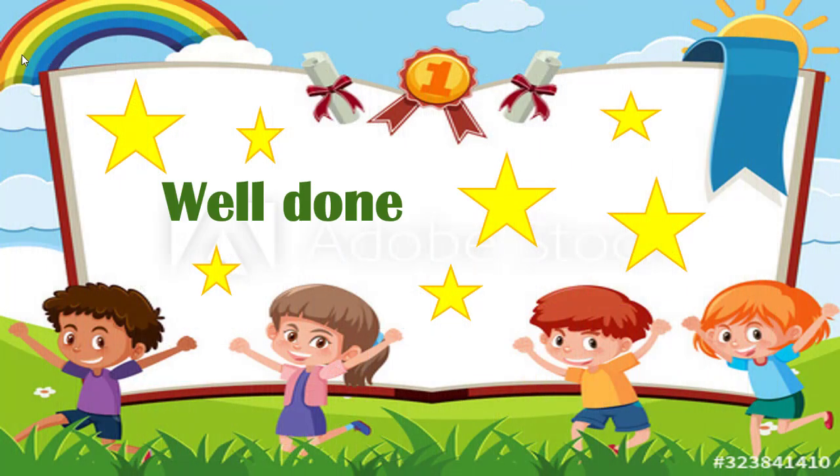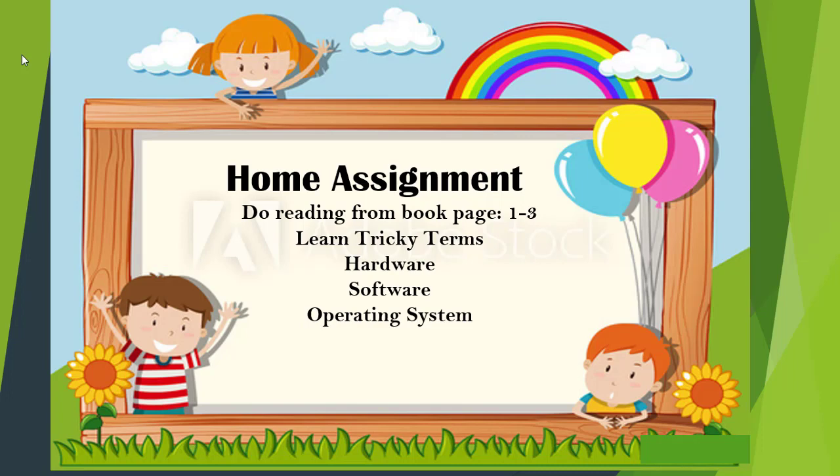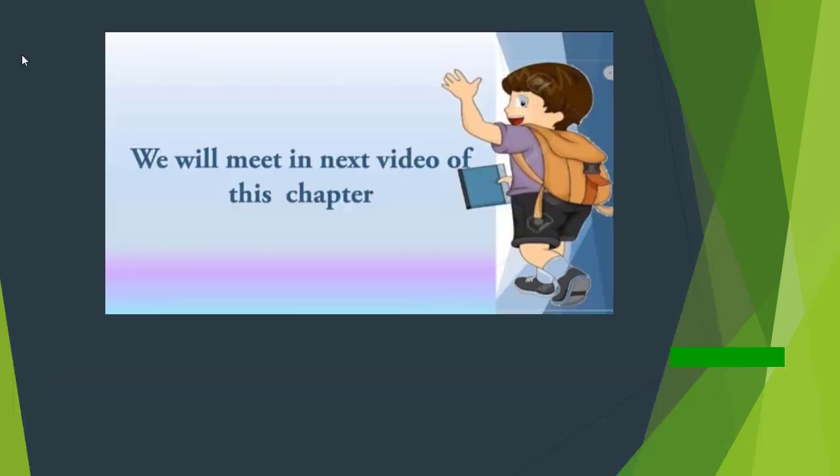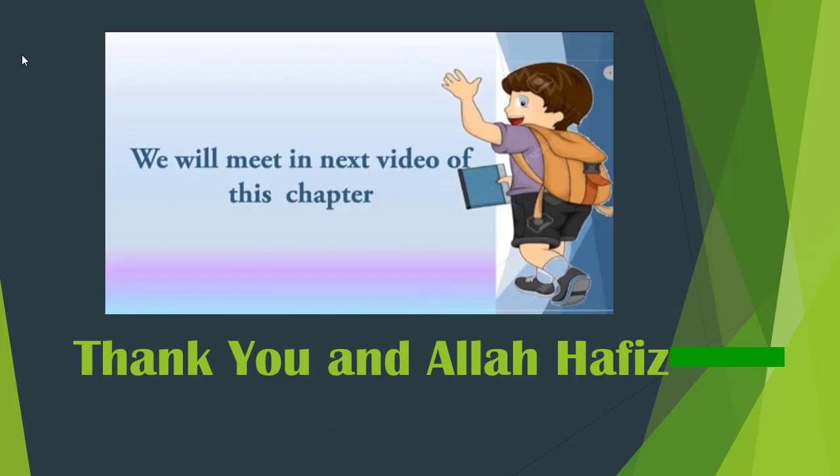Now it is time for your home assignment. Do reading from book pages 1, 2, and 3 when you get your booklets. Also, at the end of the chapter you have your tricky terms — you need to learn them. Tricky term number 1: Hardware. Tricky term number 2: Software. Tricky term number 3: Operating System. We will meet in the next video of this chapter. Till then, thank you, and Allah Hafiz.